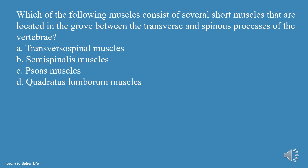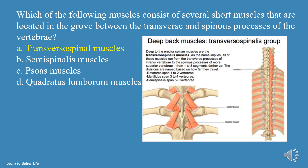Which of the following muscles consists of several short muscles located in the groove between the transverse and spinous processes of the vertebrae? a. Transversospinal Muscles, b. Semispinalis Muscles, c. Psoas Muscles, d. Quadratus Lumborum Muscles. The answer is a, Transversospinal Muscles.